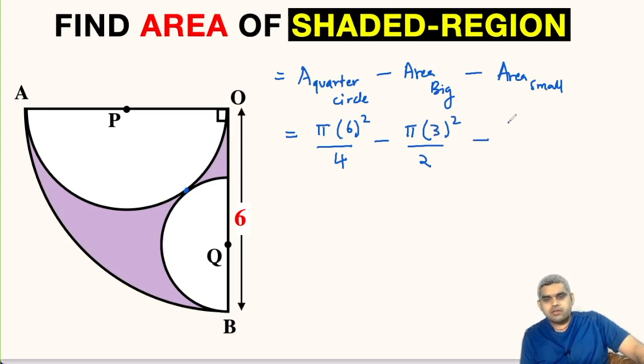Now area of small circle is π times radius squared. Here directly radius is not given, so let us assume the radius to be small r. We can write πr² upon 2 because it is a semicircle. If we can find the small r, we can find the area of the shaded region. So we will focus on finding the radius of this small semicircle.